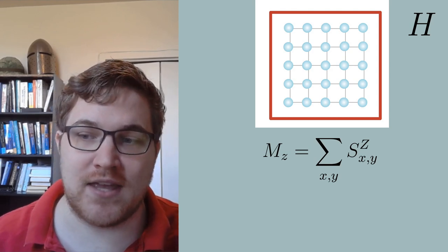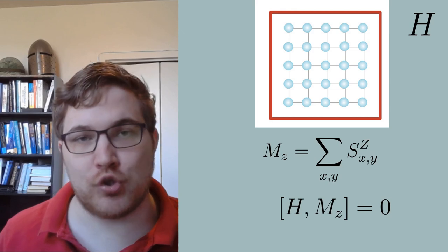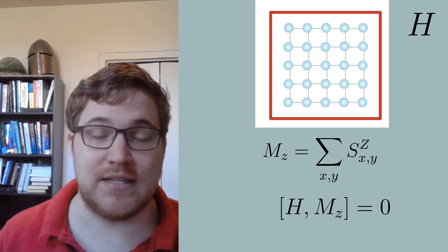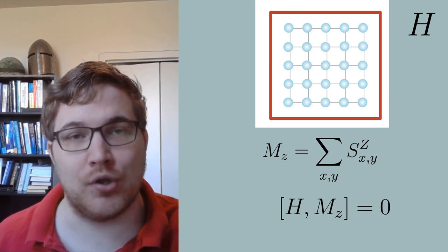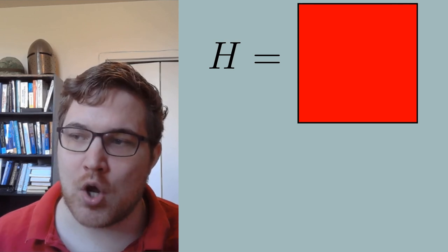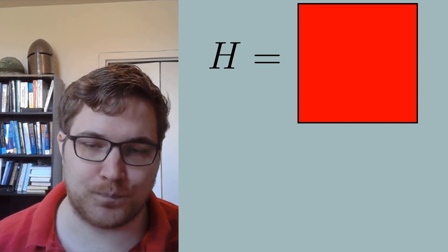If our Hamiltonian conserves MZ, what we really mean by this is that H in the magnetization commute with each other. From linear algebra, we know that if two matrices commute, we can simultaneously diagonalize them. In a more quantum language, the magnetization in the Z direction in our example is a good quantum number. For computational purposes, what this tells us is that the Hamiltonian doesn't connect regions of states with different magnetization, allowing for us to block diagonalize.